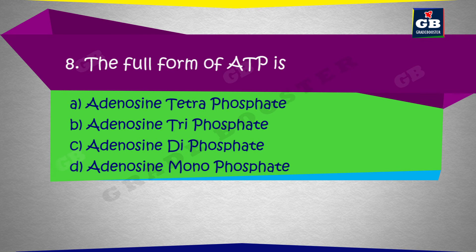The full form of ATP is: a) adenosine tetra phosphate, b) adenosine triphosphate, c) adenosine diphosphate, d) adenosine monophosphate.